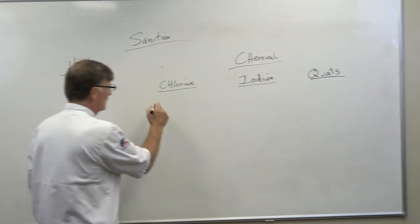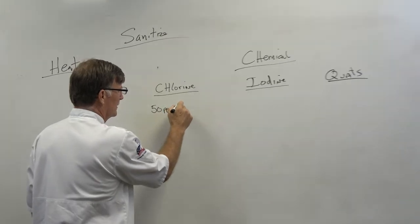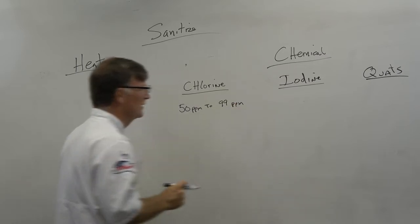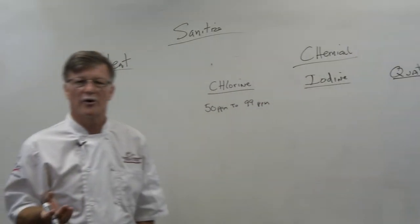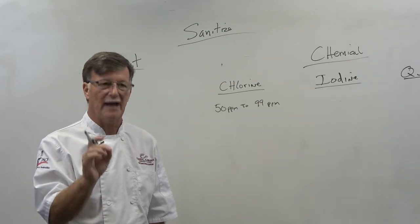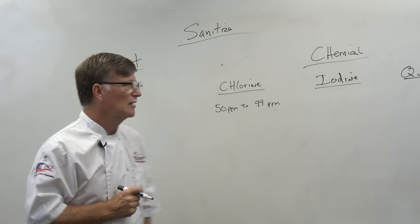Concentrations from 50 parts per million to 99 parts per million. So if you add a cup of water and you put one cap full of bleach, one cap full of bleach to a cup, you'd have the right concentration.